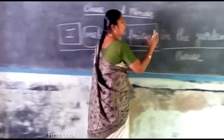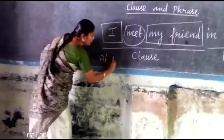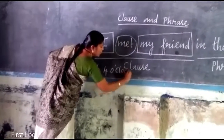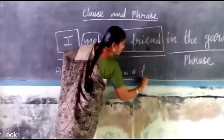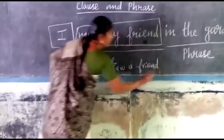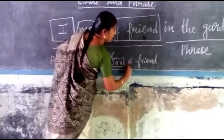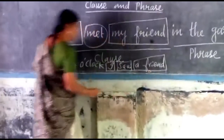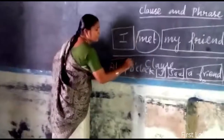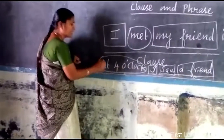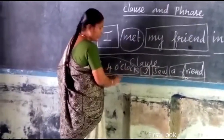The phrase comes either at the last, in the middle, or in the beginning. For example, 'At 4 o'clock, I saw your friend.' Here, as usual, 'I' is a subject, 'saw' is a verb, and 'your friend' is an object. The sentence 'I saw your friend' is complete. Here, 'at 4 o'clock' gave additional information — this is a phrase. It gave additional information that I saw my friend at 4 o'clock.